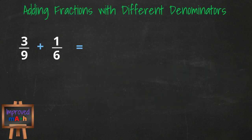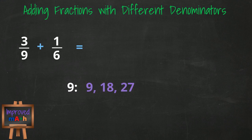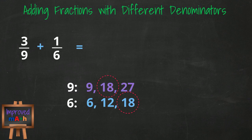We can create equivalent fractions by looking for the least common multiple between the two denominators. Let's start by writing out a few multiples of 9 and 6 to see if we can find one. The multiples of 9 are 9, 18, 27, and the multiples of 6 are 6, 12, and 18. Looks like 18 is the least common multiple, so therefore it becomes our new denominator.